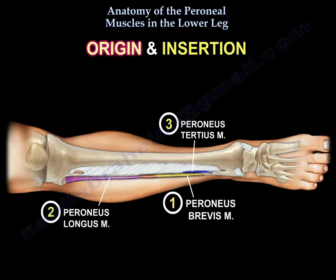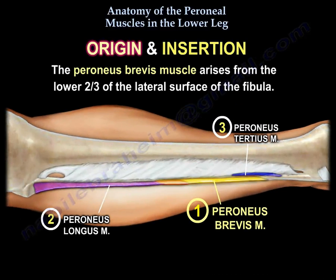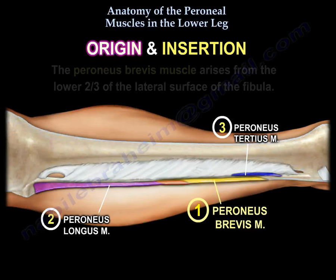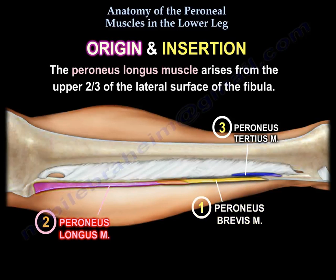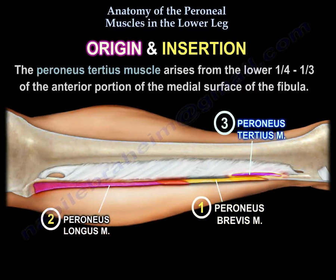Origin and Insertion. The perineus brevis muscle arises from the lower two-thirds of the lateral surface of the fibula. The perineus longus muscle arises from the upper two-thirds of the lateral surface of the fibula. The perineus tertius muscle arises from the lower one-fourth to one-third of the anterior portion of the medial surface of the fibula.